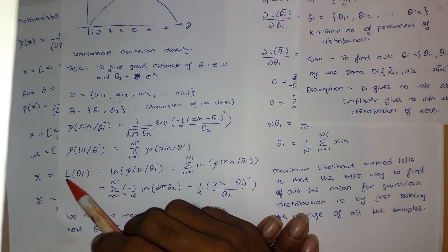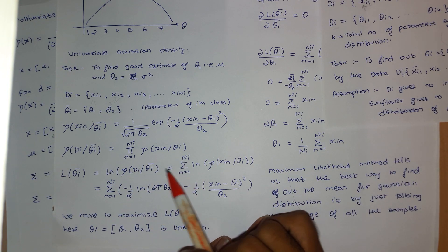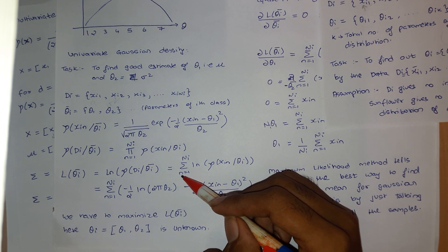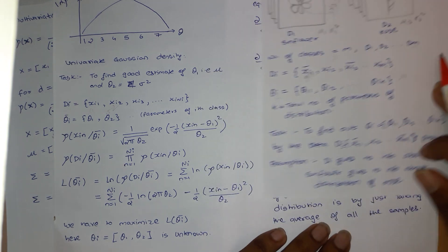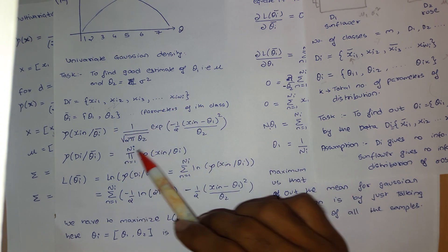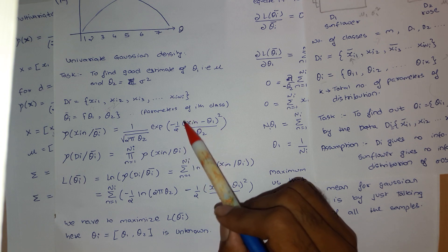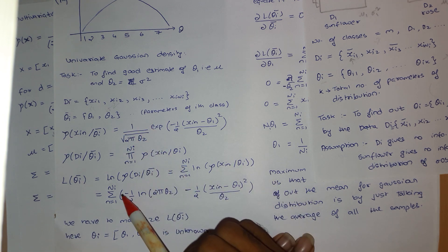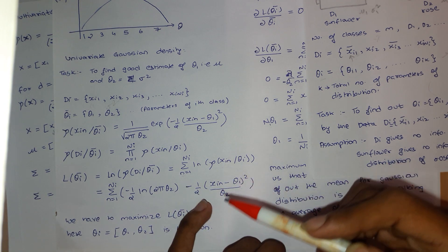We take the log of the likelihood so the product changes to a summation. Note that n goes from 1 to n_i because there are n_i samples in a particular dataset. Substituting the Gaussian formula and taking the log gives: minus one-half times (x_in minus theta_1) squared divided by theta_2, minus one-half log(theta_2). This log-likelihood function L_i is what we need to maximize.